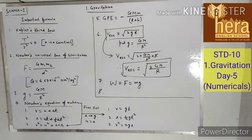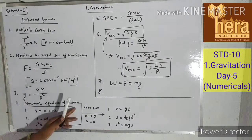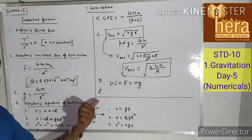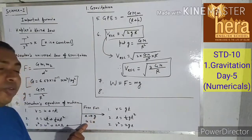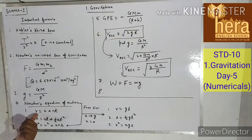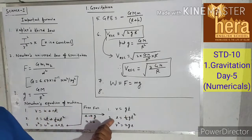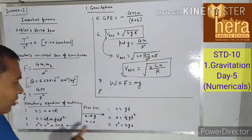In the case of free fall, Newton's equations of motion are modified: at the place of 'a' you put g, and u is equal to 0. So the first equation becomes v = gt, the second becomes s = ½gt², and the third becomes v² = 2gs.